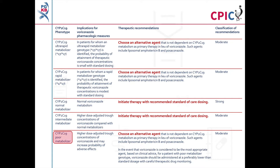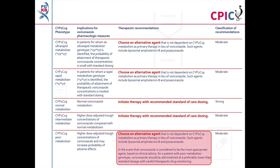Patients with a CYP2C19 poor metaboliser phenotype will have higher dose-adjusted trough concentrations of voriconazole compared to normal metabolisers and may also have an increased probability of experiencing adverse effects. An alternative agent that is not dependent on metabolism by CYP2C19 should be chosen for these patients. If voriconazole is to be used, it should be administered at a lower than standard dosage in conjunction with therapeutic drug monitoring. This is a moderate recommendation.